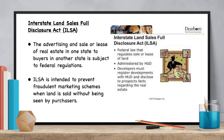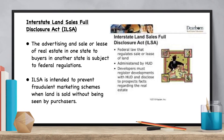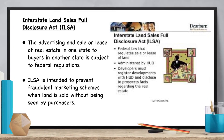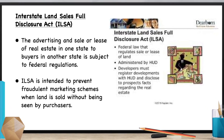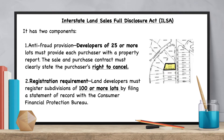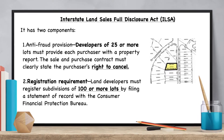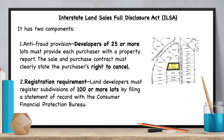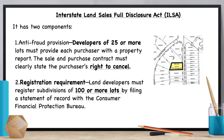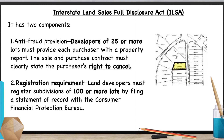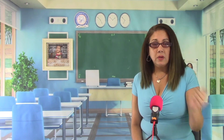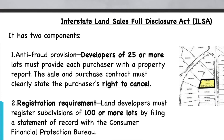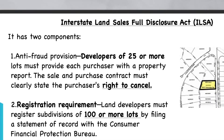The Interstate Land Sales Full Disclosure Act is intended to prevent fraudulent marketing schemes when land is sold without being seen by purchasers. Developers must register subdivisions of 100 or more lots with the Consumer Financial Protection Bureau before offering unimproved lots in interstate commerce. Developers of 25 or more lots must provide buyers with a property report prior to signing a sale contract.